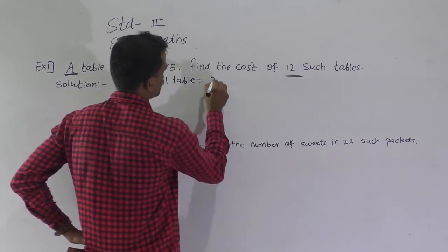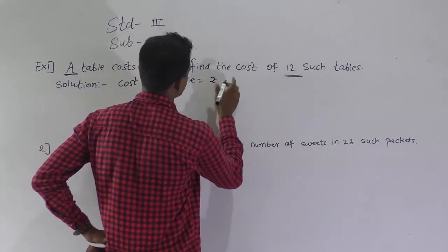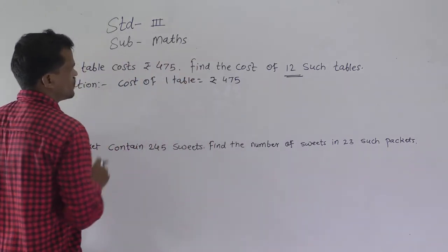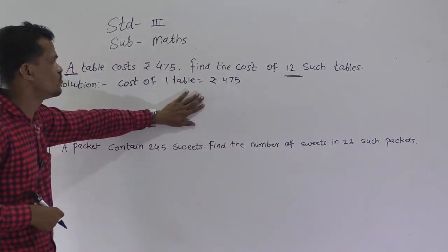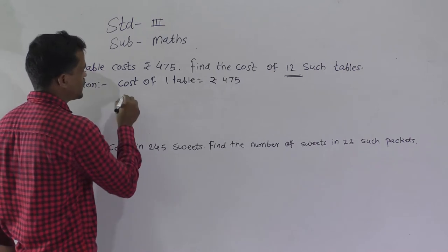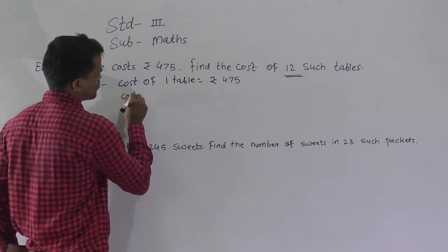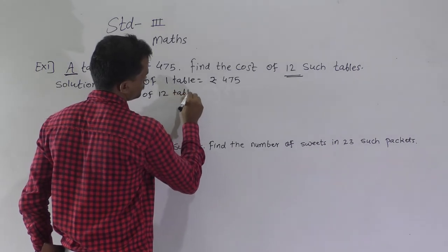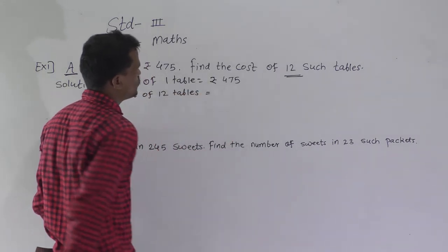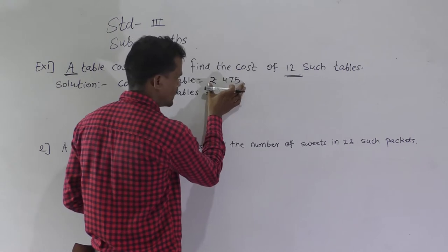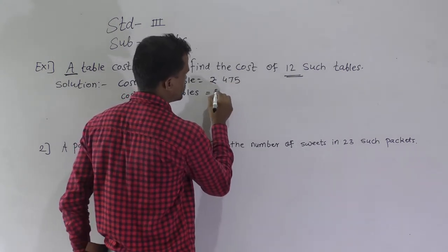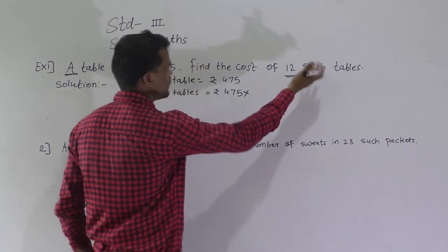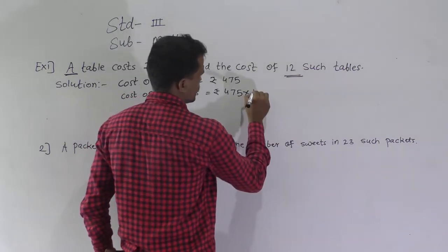Write the given information. Cost of one table is equal to rupees 475. And what you have to find: cost of 12 tables is equal to cost of one table, that is rupees 475, multiplied by 12.